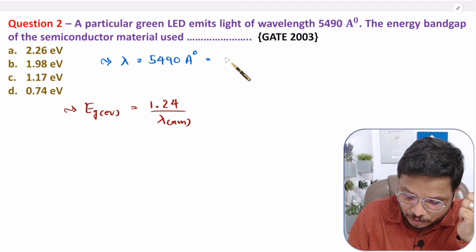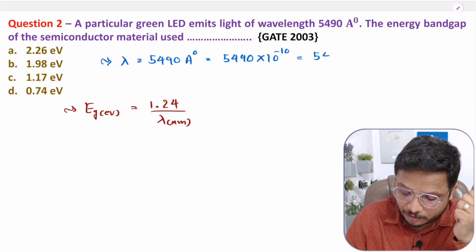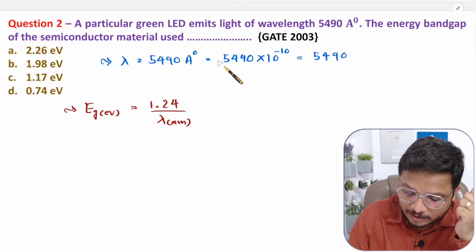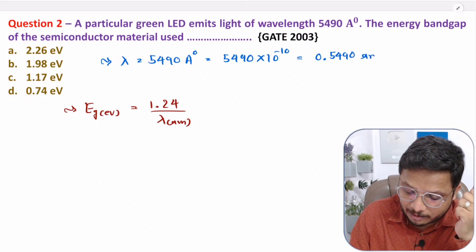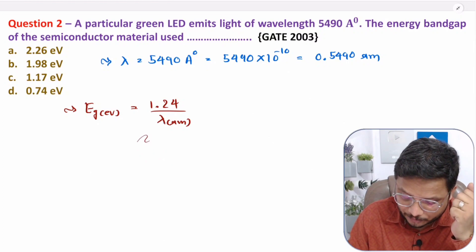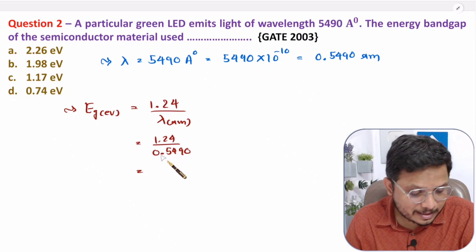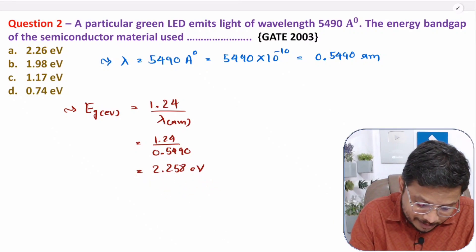To convert 5490 angstrom to micrometers: since 1 angstrom = 10⁻¹⁰ m, we shift 4 digits, giving λ = 0.5490 micrometers. Substituting into the formula: Eg = 1.24 / 0.5490 = 2.258 eV. So the answer is approximately 2.26 eV, which corresponds to option A.